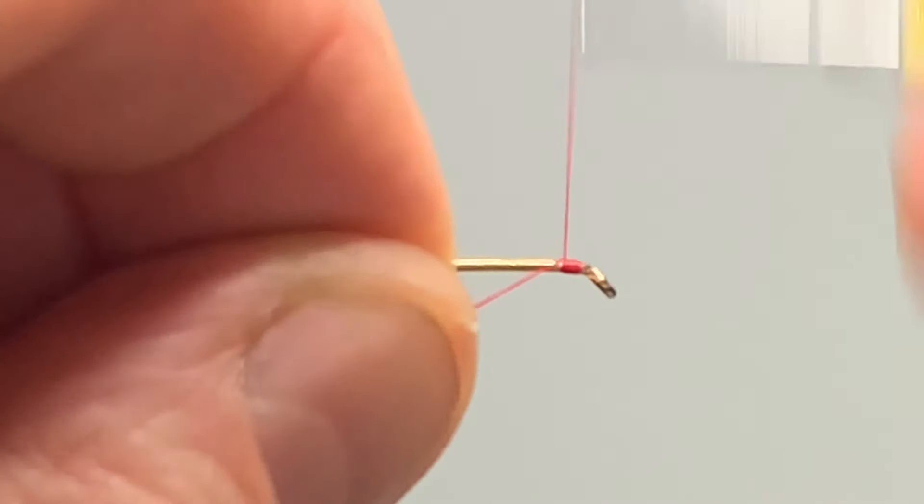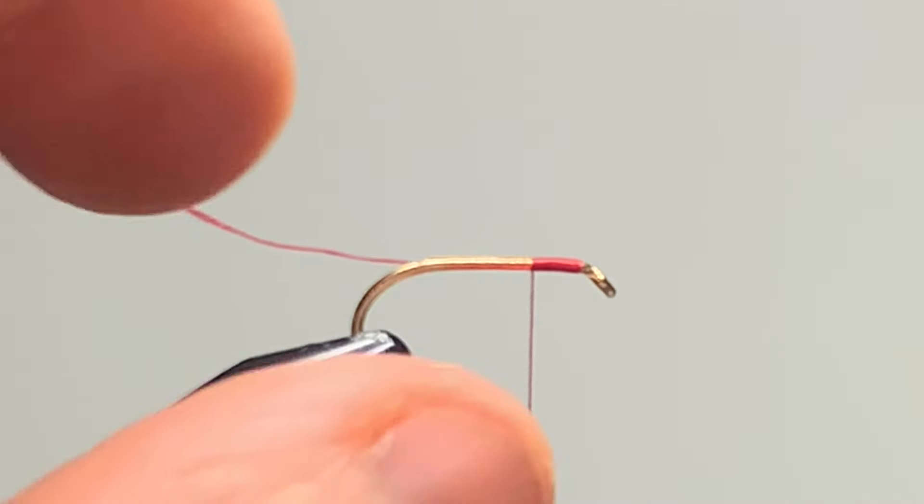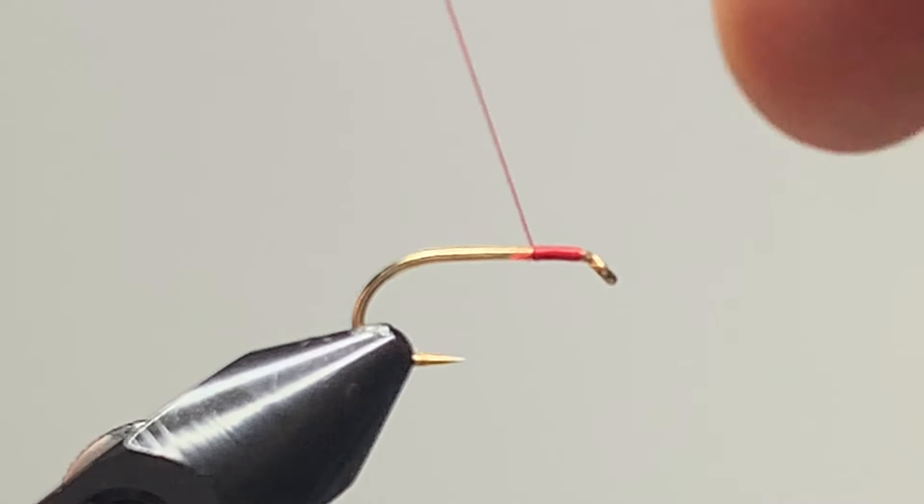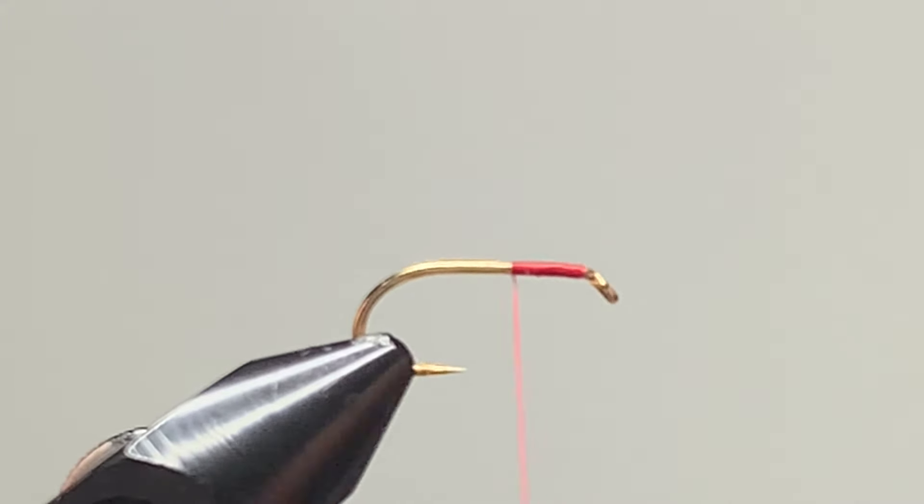Start a couple of millimeters behind the eye of the hook, working your way down. Clip away your waste and continue on right down to the bend of the hook, between the barb and the point.